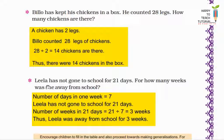Next, Leela has not gone to school for 21 days. For how many weeks was she away from school? Leela didn't go to school for 21 days, so for how many weeks was she away? We know that the number of days in 1 week is equal to 7. So to find out the number of weeks in 21 days, we will do 21 divided by 7, which is equal to 3 weeks. So Leela was away from school for 3 weeks. I hope up to this the concept is clear to you.